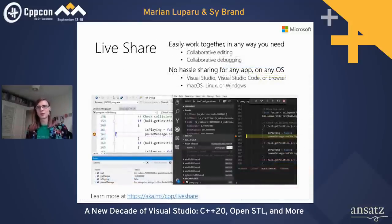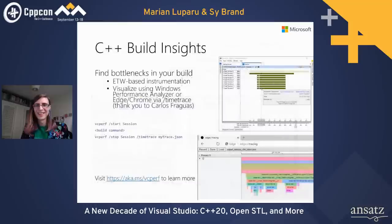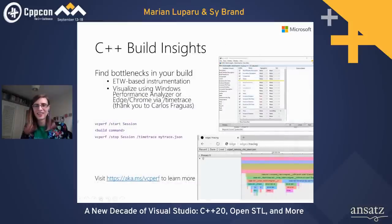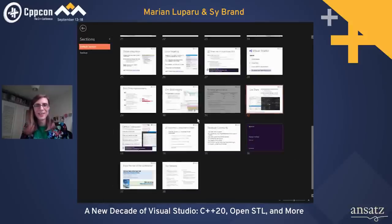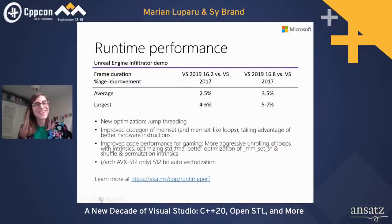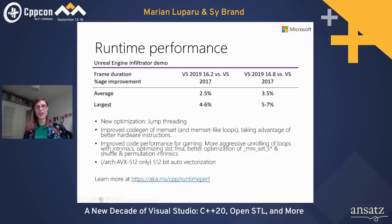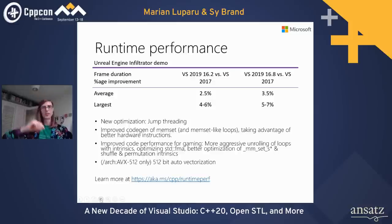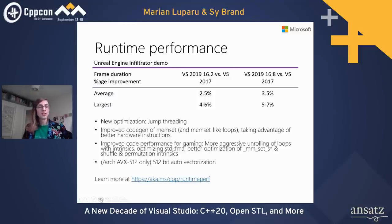Runtime performance is why we use C++ in the first place. Our latest optimization is jump threading: if multiple jumps in code always follow the same path, you can optimize out intermediate jumps and go straight to the end. Other examples include memset code gen improvements and better optimization around intrinsics. If you use a lot of intrinsics, check for improvements. Also, using the AVX-512 flag enables better auto-vectorization.